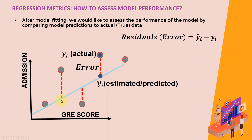Any point that lies on the line is the estimated or predicted value. For example, given a GRE score, the model predicted a chances-of-admission value of, say, 0.7. That's why we call this y-hat — y-hat indicates a prediction or estimate. However, the actual true y value was maybe 0.8. So we calculate the residuals or errors, which is simply the difference between the model prediction y-hat minus the ground truth actual value yi.